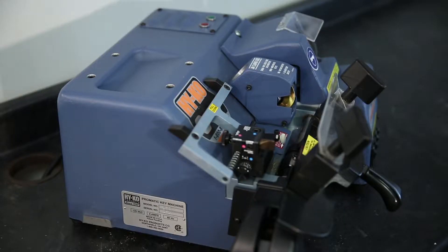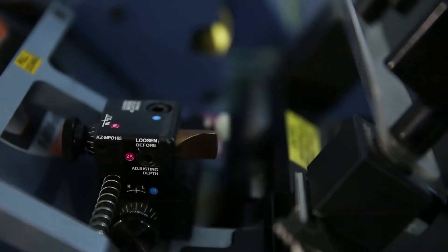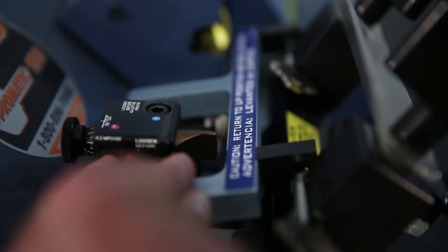With both jaws set to the standard jaw setting, place an uncut SC1 key blank with the blade upside down in both the left and right jaws. Bring the gauge fork down and tip gauge the SC1 keys.